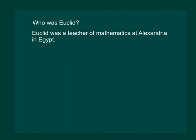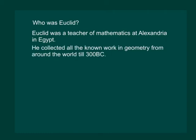Euclid was a teacher of Mathematics at Alexandria in Egypt. He collected all the known work in geometry from around the world till 300 BC.